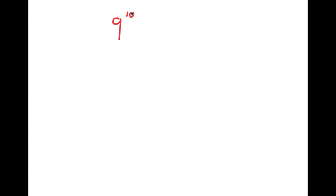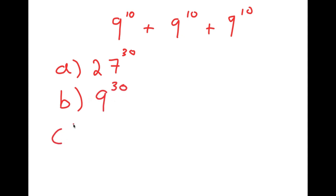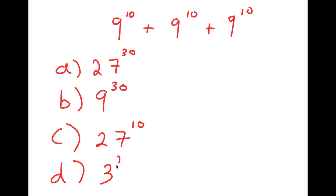In this video, I'm going to be solving the problem 9 to the power of 10 plus 9 to the power of 10 plus 9 to the power of 10. For this problem, I actually have four answer choices. For A, I have 27 to the power of 30. For B, I have 9 to the power of 30. For C, I have 27 to the power of 10. And for D, I have 3 to the power of 21.